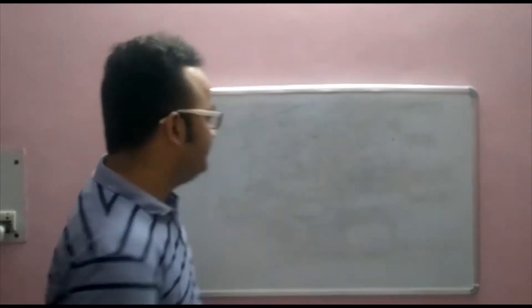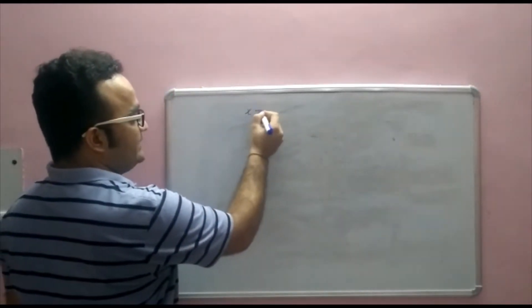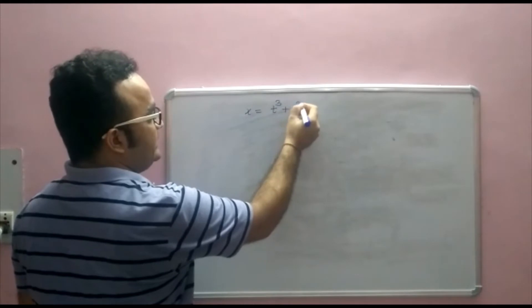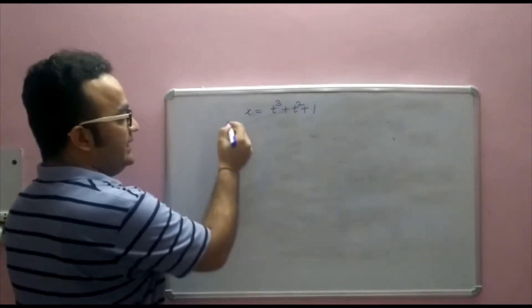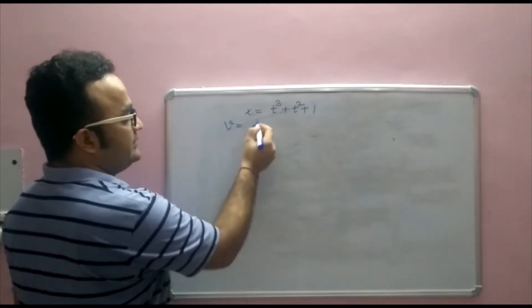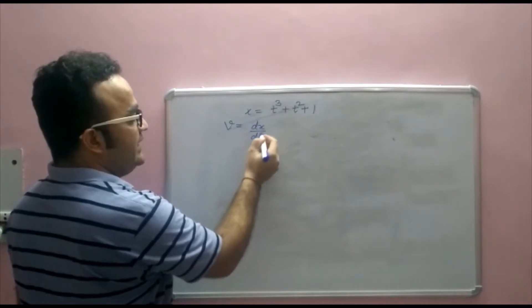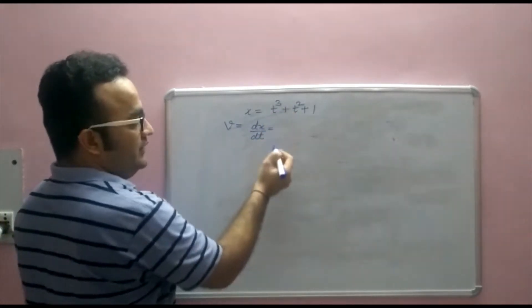So let's see. For example, if x is given as t cubed plus t square plus 1 and they ask you to find velocity. So as we know that velocity is dx by dt. So if you differentiate it,